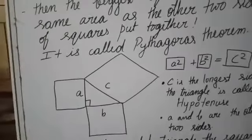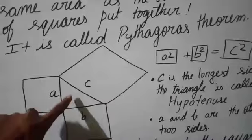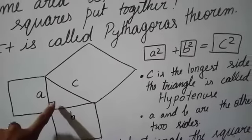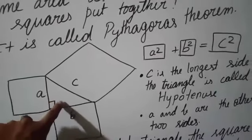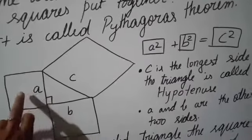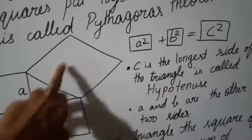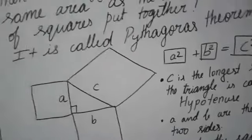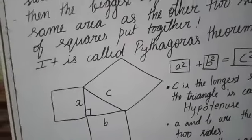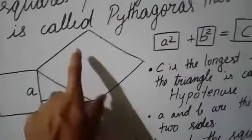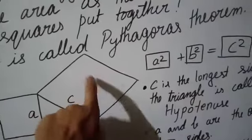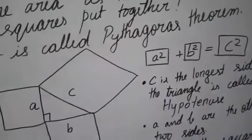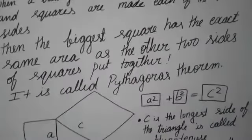So what we understood is: when a right triangle has a right angle — that is, 90 degrees — and squares are made on each side, then the areas of the two smaller squares, if we put them together on the third side, they will be equal. Squares put together equal the biggest square. This is called Pythagoras.